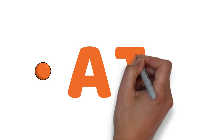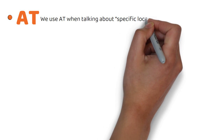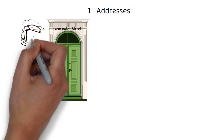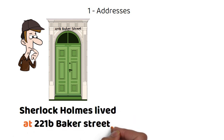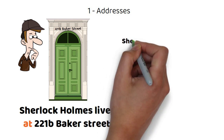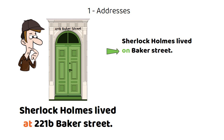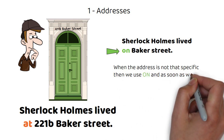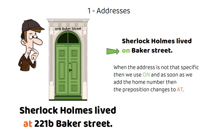Let's now move on to the preposition at. We use at when talking about specific locations. Number one: addresses. For example, Sherlock Holmes lived at 221B Baker Street. Note the difference: Sherlock Holmes lived on Baker Street. When the address is not that specific, we use on. As soon as we add the house number, the preposition changes to at.